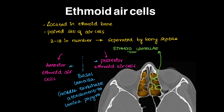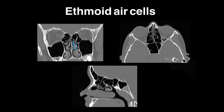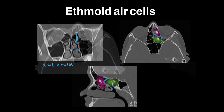The basal lamella is where the middle turbinate attaches to the lamina papyracea. On coronal CT, we can see how the middle turbinate attaches to the lamina papyracea — this is the basal lamella of the middle turbinate. On axial and sagittal sections, we can see this attachment dividing the cells into anterior and posterior groups: the pink-colored cells are anterior ethmoidal air cells, and the green are the posterior ethmoidal air cell group.